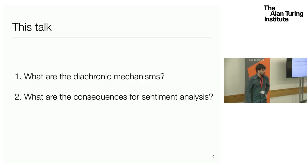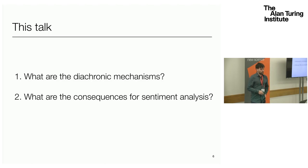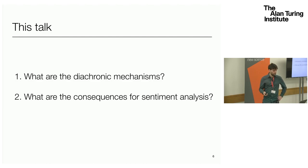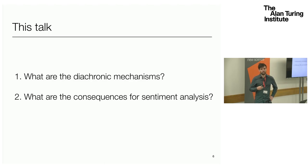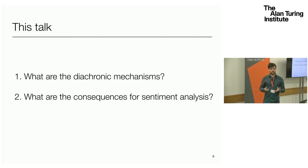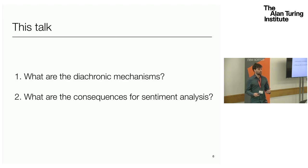In this talk, I'm interested in this idea of there being an asymmetry in the way that people use positive versus negative language, but I'm particularly interested in the historical or diachronic mechanisms — how does this asymmetry actually play out in the way that language changes over time? I'm also interested in a very practical question: if there is this asymmetry, if negative language is more differentiated and there are differences in how negative versus positive language changes over time, what are the consequences for doing sentiment analysis in NLP?